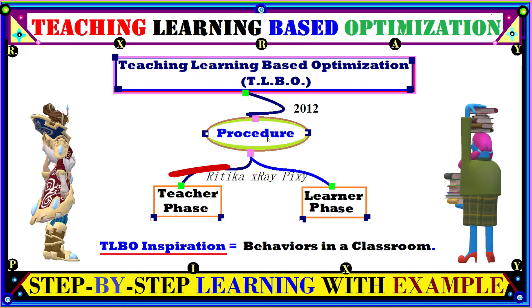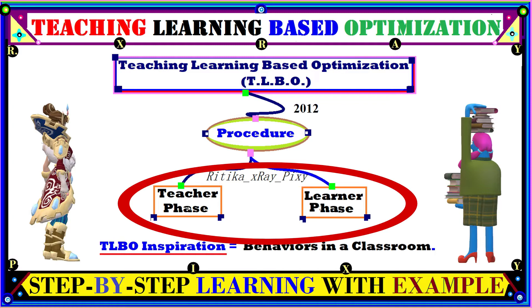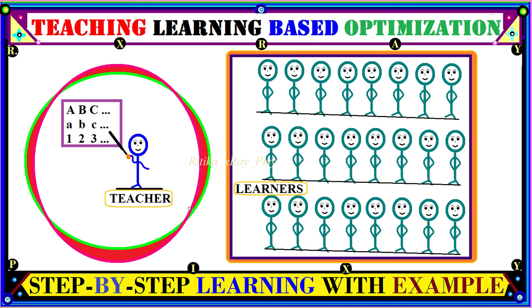We have two main procedures in this algorithm: the teacher phase and the learner phase. In the teacher phase, we have the teacher, and in the learner phase, we have a collection of students or learners.